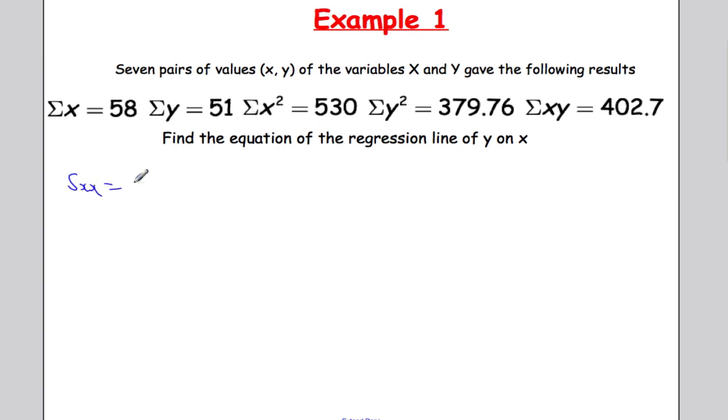And that's given by the sum of the squares minus the sum of the x's, sum of the x's 58 squared all over n which is seven.